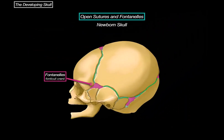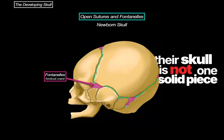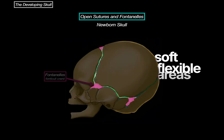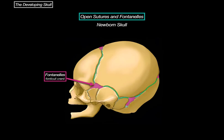So what are fontanelles? When a baby is born, their skull is not one solid piece of bone. It's actually made up of several bones separated by soft, flexible areas — and those spots are what we call fontanelles. They are basically little gaps between the bones of the skull, covered by a tough membrane made of connective tissue.